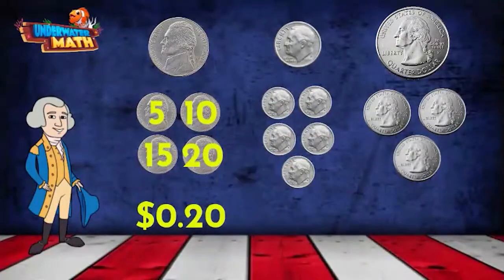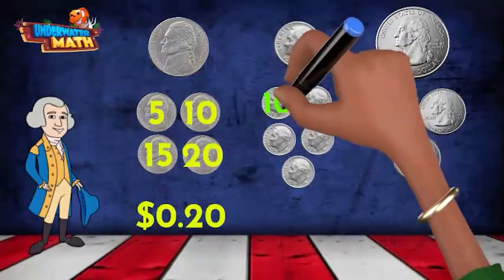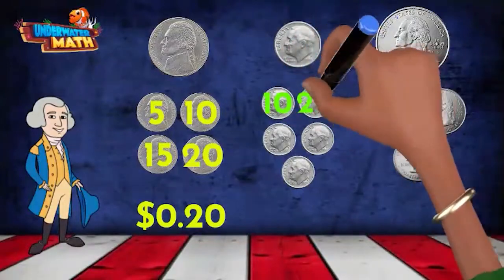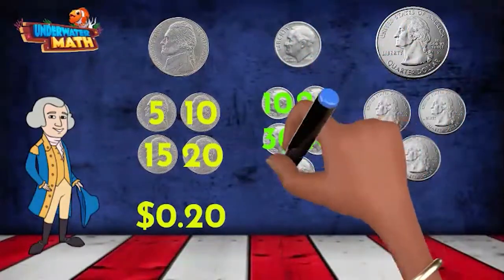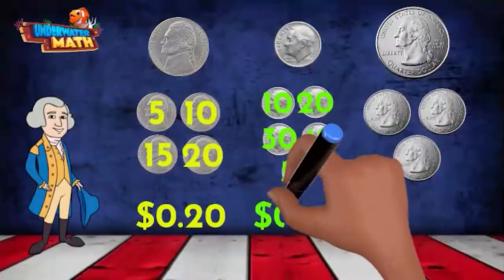Dimes are worth 10 cents, so we should skip count by tens: 10, 20, 30, 40, 50. We have 50 cents in dimes.